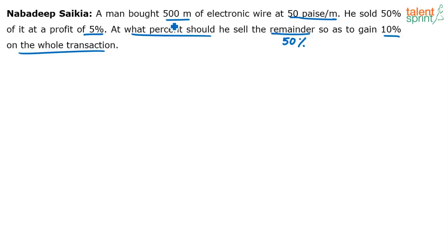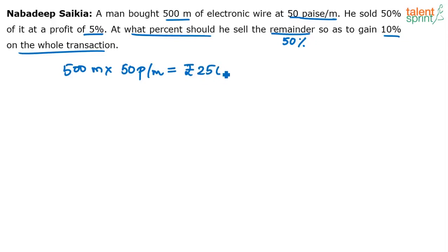Go by the cost price. He has bought 500 meters at 50 paisa per meter, so what is the total amount he has spent? 250 rupees. His total cost price is 250 rupees — 500 meters at 50 paisa, which is half a rupee per meter, so for 500 meters he spends 250 rupees.